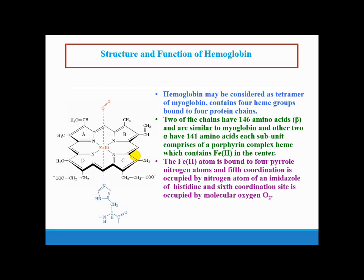If you look at the structure and function of hemoglobin, hemoglobin may be considered as tetramer of myoglobin, contains four heme groups bound to four protein chains. Two of the chains have 146 amino acids (beta), and are similar to myoglobin. The other two alpha chains have 141 amino acids. Each subunit comprises of a porphyrin complex heme, which contains Fe(II) in the center. The Fe(II) atom is bound to four pyrrole nitrogen atoms and fifth coordination is occupied by nitrogen atom of an imidazole of histidine. And sixth coordination site is occupied by molecular oxygen.